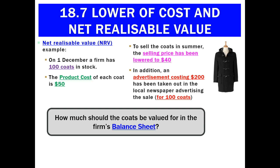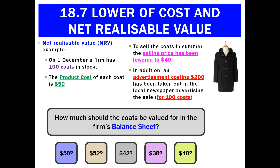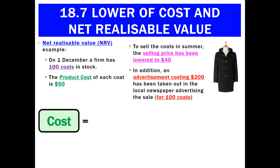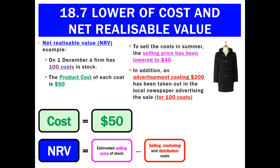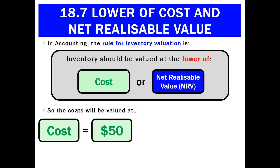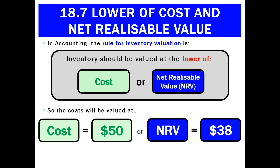So how much should I value these coats at? The rule we apply is: inventory is always valued at the lowest of cost or net realisable value. Cost in this case was $50 — that's how much the coats cost originally. Net realisable value is the estimated selling price less any selling, marketing, and distribution costs. We think we can only sell them for $40, but to do so I'm going to have to take out a $200 ad covering a hundred coats — that's $2 per coat. So the net realisable value is $38. The rule says pick whichever is lower: the cost of $50 or net realisable value of $38. The lowest is net realisable value, so that's the amount we pick.